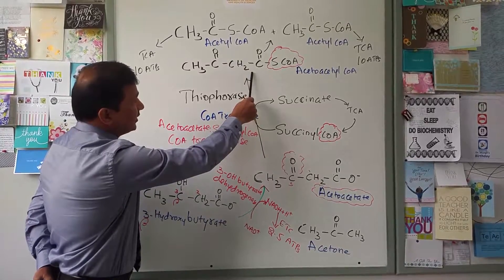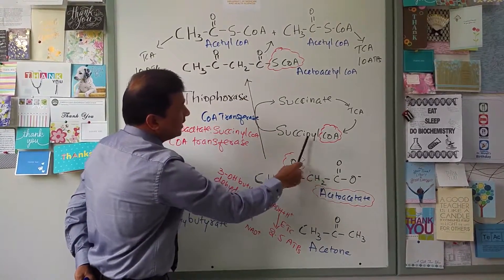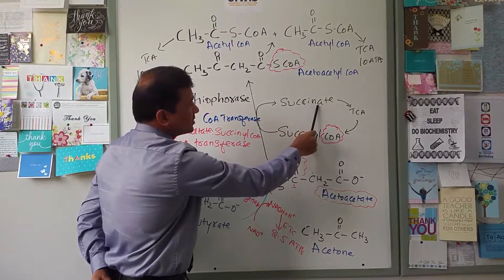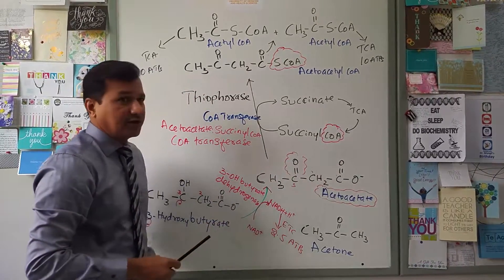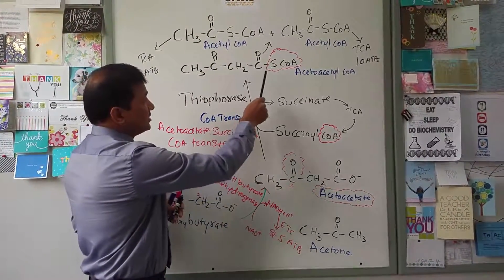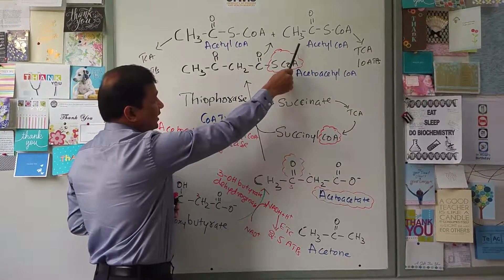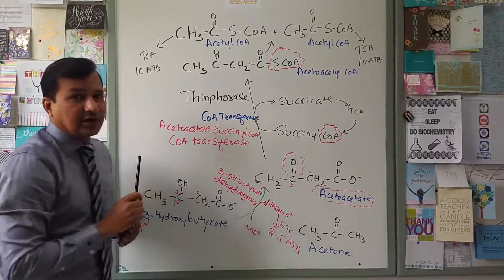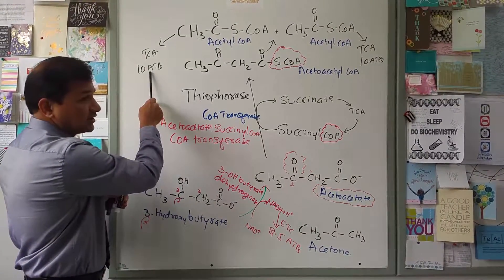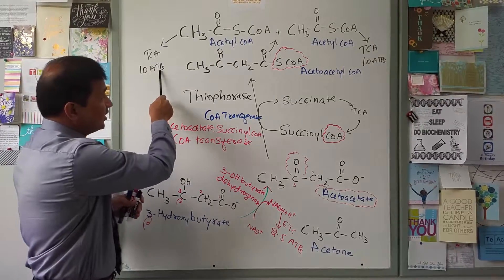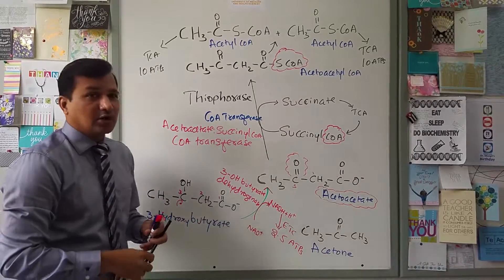Acetoacetate is converted to acetyl CoA. During this time, a TCA cycle intermediate — succinyl CoA — is used and converted to succinate, so succinate gets back into the TCA cycle and the cycle can continue. Acetoacetyl CoA is then broken down into two molecules of acetyl CoA, and each molecule of acetyl CoA enters the TCA cycle and gives you 10 ATP each.